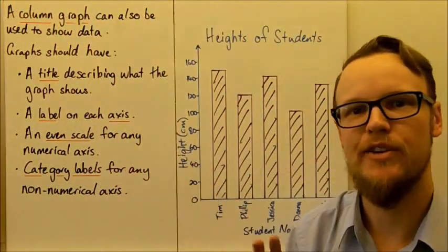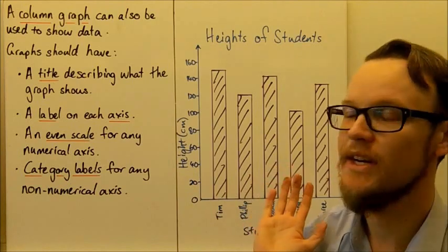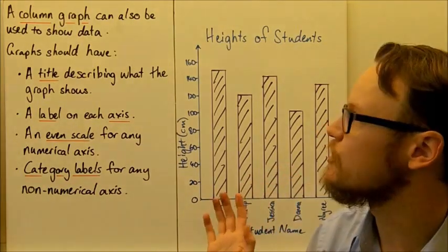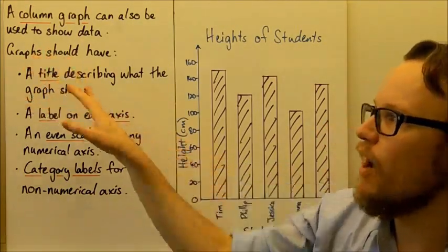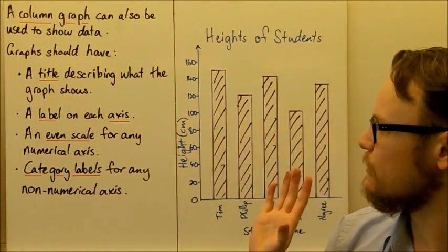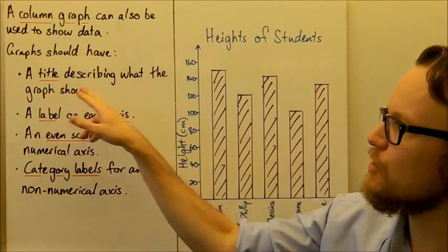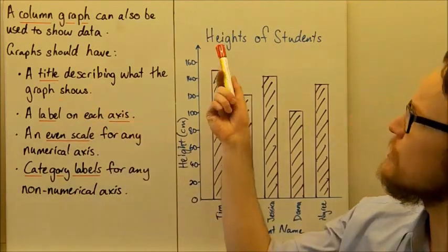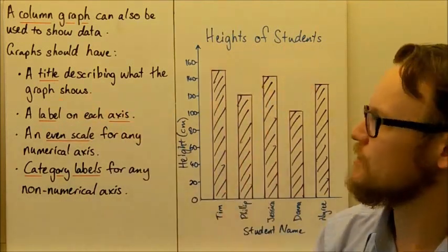A column graph is another way that we can use to show data. Any graph, whether it's a dot plot or a column graph, needs to have a title describing what the graph shows. So this title here is the heights of students.